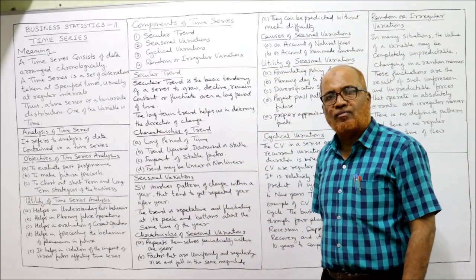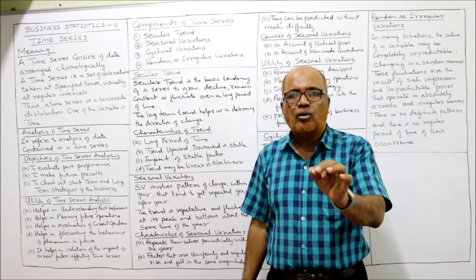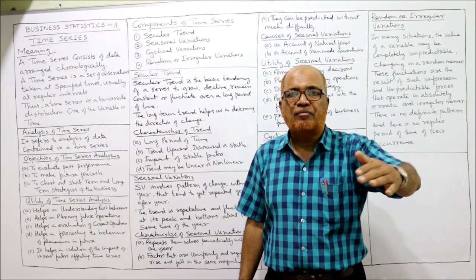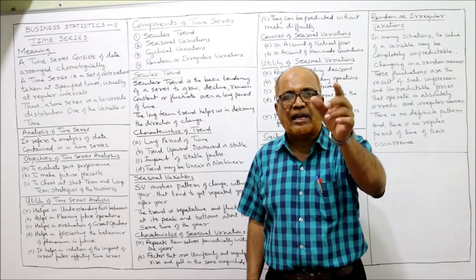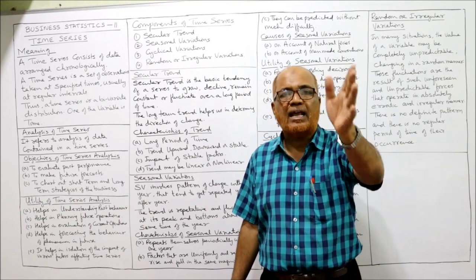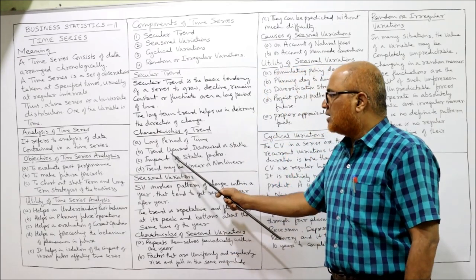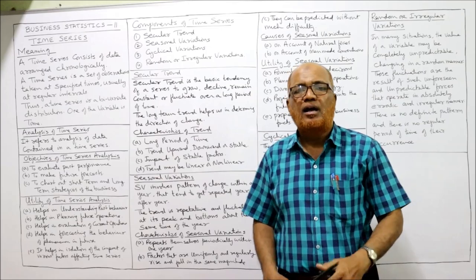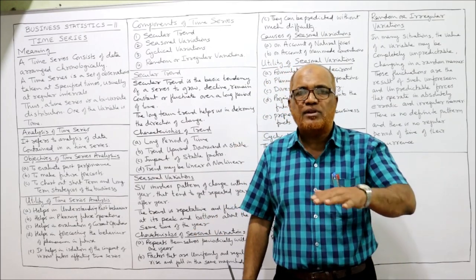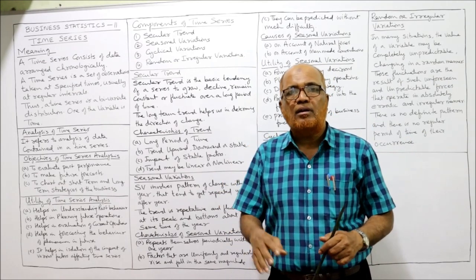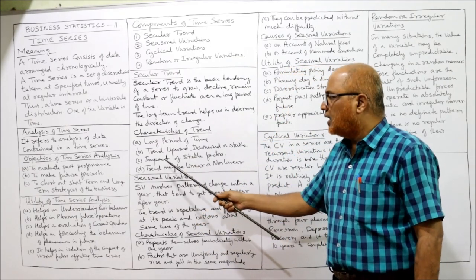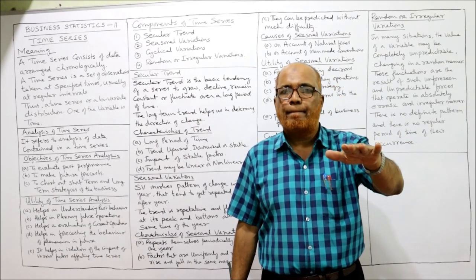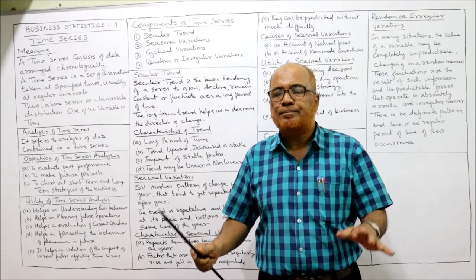Characteristics of trend: first, it relates to a long period of time — trend will not be calculated for only two, three, or four years. If you want to find out the trend, take a long period of time like 10 or 15 years, only then can you judge the long-term direction of change. Second, trend can be upward, downward, or stable — some variables will show increasing trend, some declining, some are constant for a long period of time, and some will fluctuate every year. Third, the factors which affect this long-term trend are normally stable.